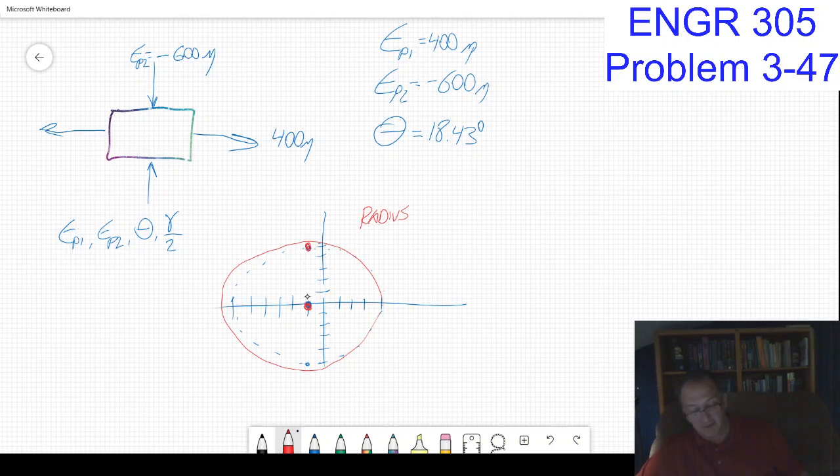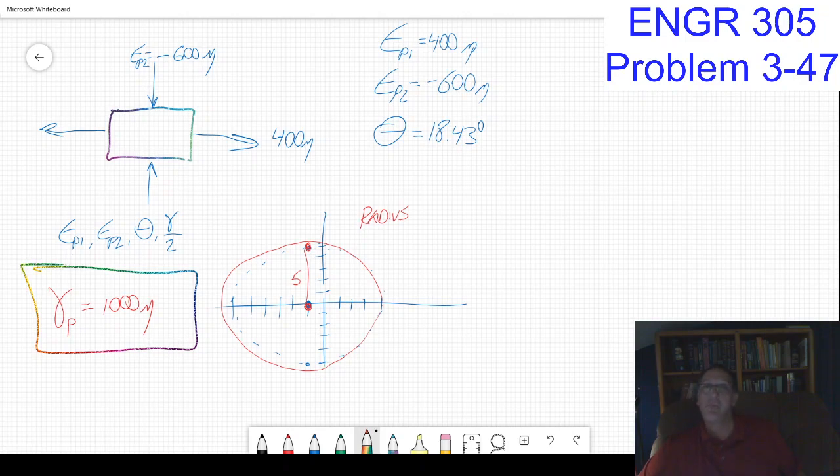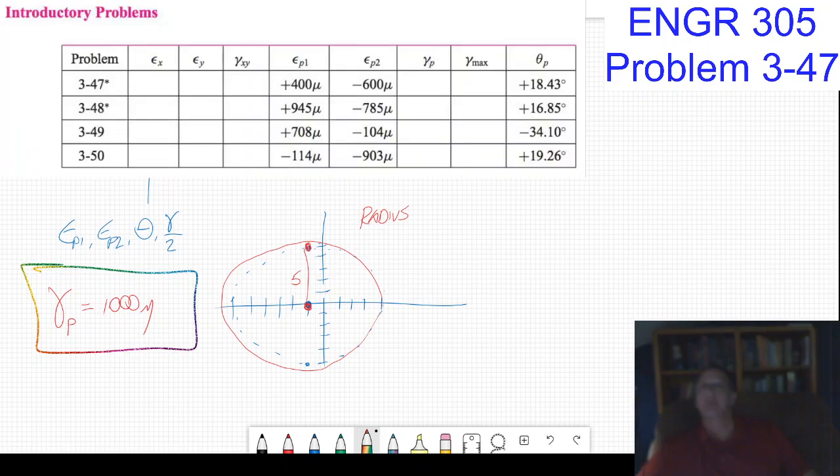If I look at the table, they're asking for the principal strain or the maximum strain. The principal strain is the radius of the circle, which is 500 units. But that's gamma over two, so gamma_principal is equal to 1000 micro. That's what the maximum shear strain is going to be.